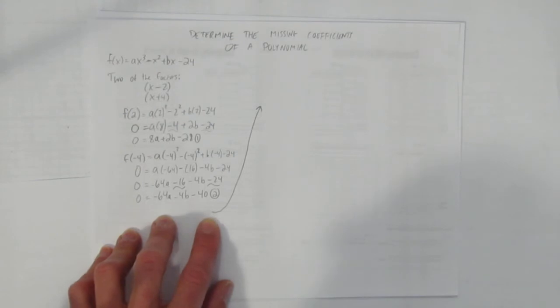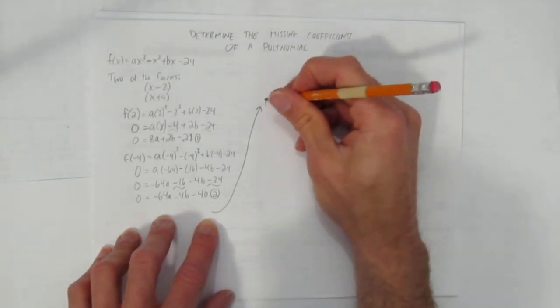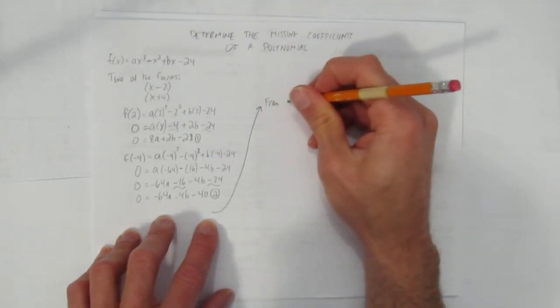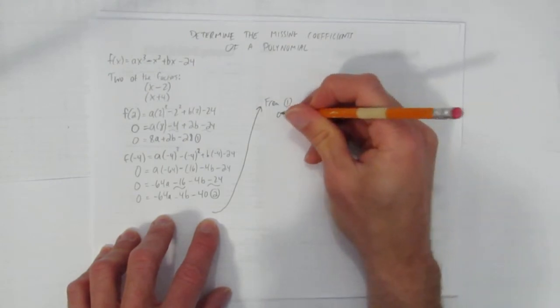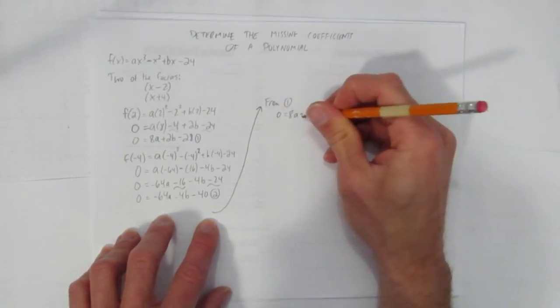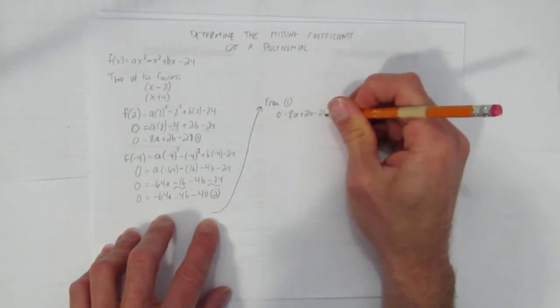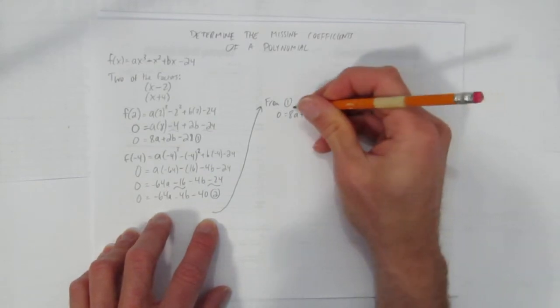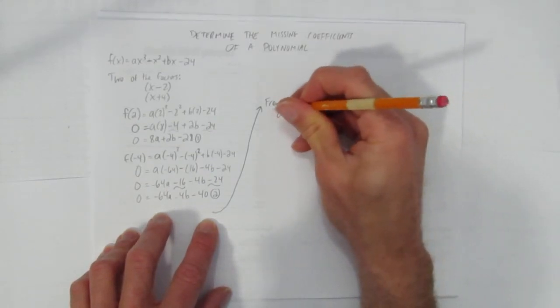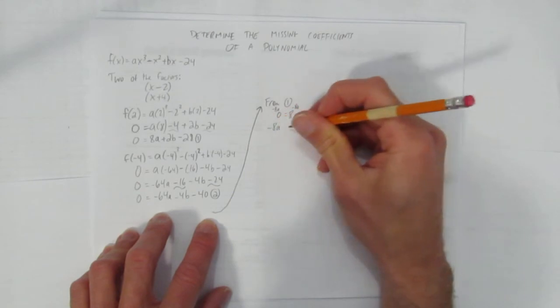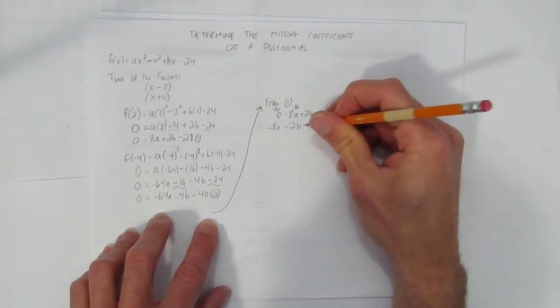Some of you are going to use elimination, that's okay. I'm going to use substitution from equation 1. I'm going to start with that, so I have 0 equals 8a plus 2b minus 28, and I'm going to get the b by itself. So I'm going to subtract 8a both sides, I get negative 8a equals 2b minus 28.